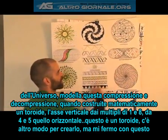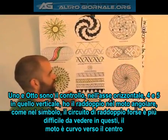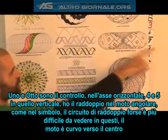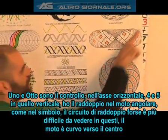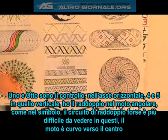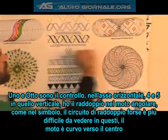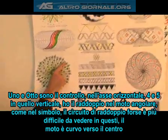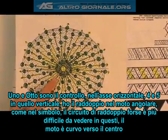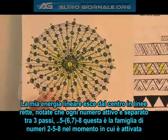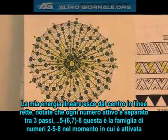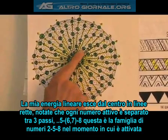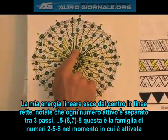There are other ways to build them, but I'm going to stick with my 1 and 8 as my control. So I have 1 and 8 on the horizontal, 4 and 5. And I've got doubling moving at angular motion, just like on my symbol — the doubling circuits. Here would be 1, moving in at an angle towards the center. Here's my linear energy coming out from the center, moving in straight lines. Notice every number it's activating is separated by thirds.